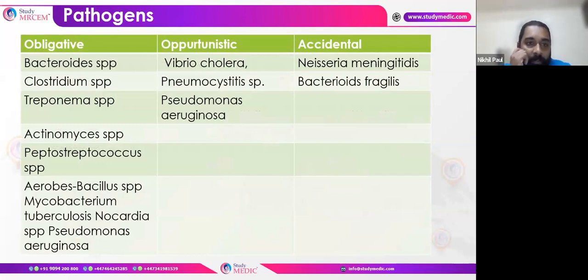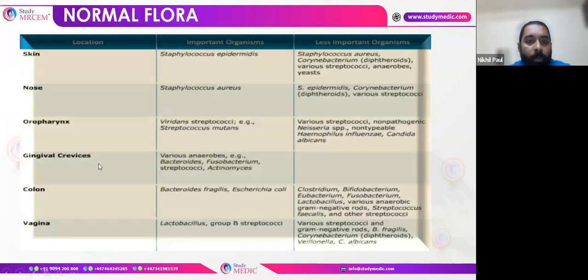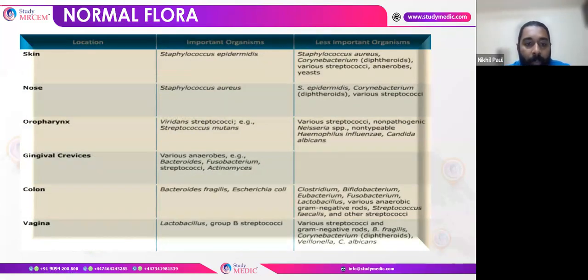Various pathogen types include obligate, opportunistic, and accidental. Obligate pathogens include Clostridium, Actinomyces, Mycobacterium, and Pseudomonas. Opportunistic include Vibrio, Pseudomonas, and sometimes Pneumocystis. Accidental pathogens include Neisseria. We also need to know the normal flora: skin has Staphylococcus epidermidis, nose has Staphylococcus aureus, oropharynx has Streptococcus viridans, gingival crevices have anaerobes like Fusobacterium, colon has Bacteroides fragilis, and vagina has yeast and Lactobacillus.